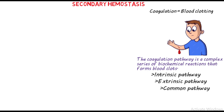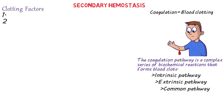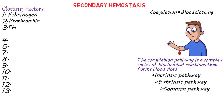The intrinsic and extrinsic pathways eventually meet at the common pathway, where a fibrin clot is formed that helps to stop bleeding. There are factors and proteins involved in this process. We have 13 clotting factors — bear in mind that there is no clotting factor six, and there are two other clotting factors that don't have numbers assigned to them.